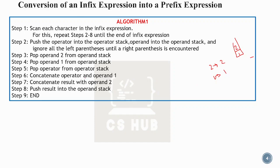We concatenate the operator and operand 1 in the correct order. So the result is: operator, then operand 1, then operand 2. The operator is applied and the result is pushed onto the stack. This produces the prefix form: operator appears first, followed by its operands in order.